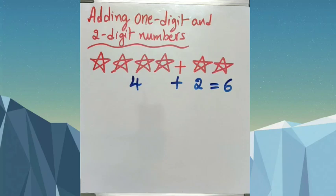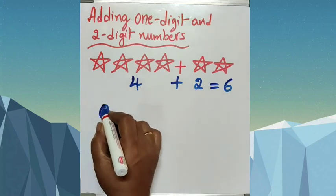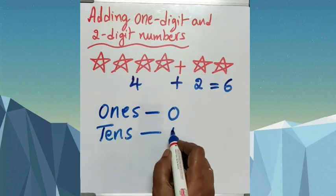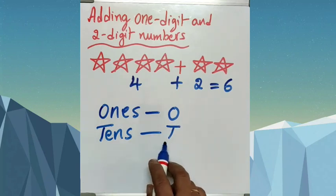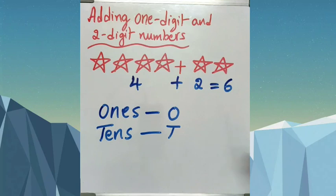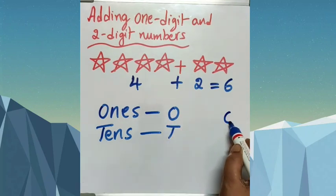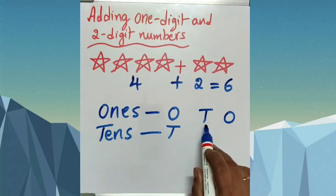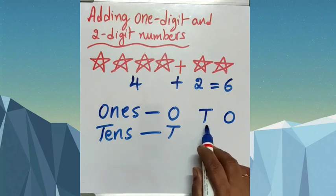Today, let us learn adding 1-digit and 2-digit numbers. How to add 1-digit and 2-digit numbers? All of you know the ones and tens place. Ones is represented as O, and tens is represented as T. Always you have to write these place values from right to left — ones first, then tens to the left of ones.